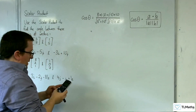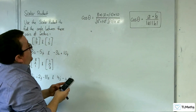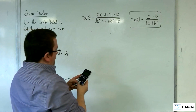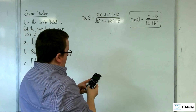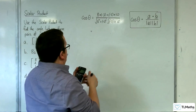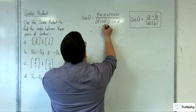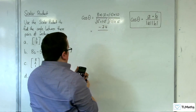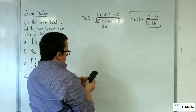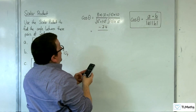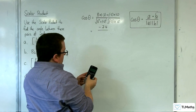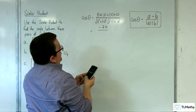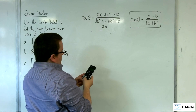So we've got 8 times minus 3, take away 5 times 10, giving minus 74 in the numerator. Then we've got 8 squared plus 5 squared, times by the square root of 9 plus 100.